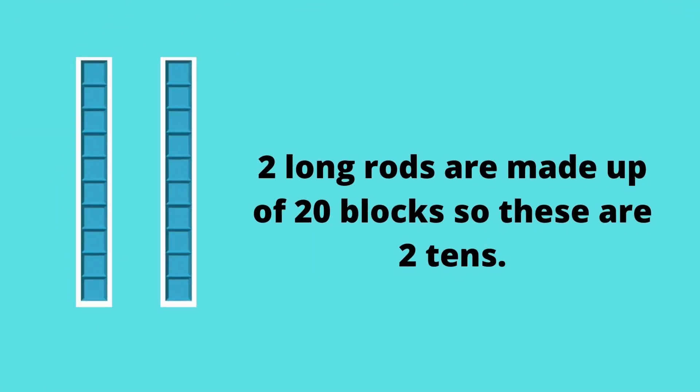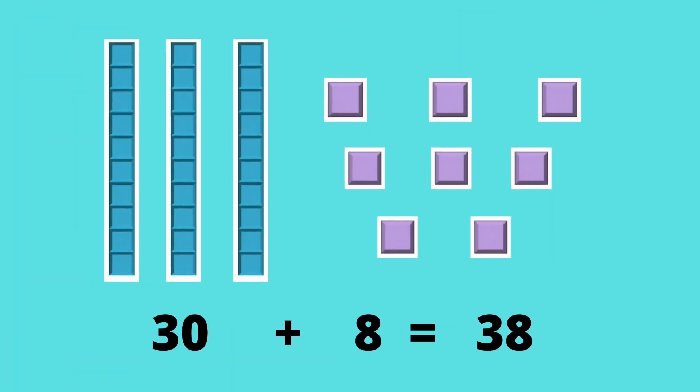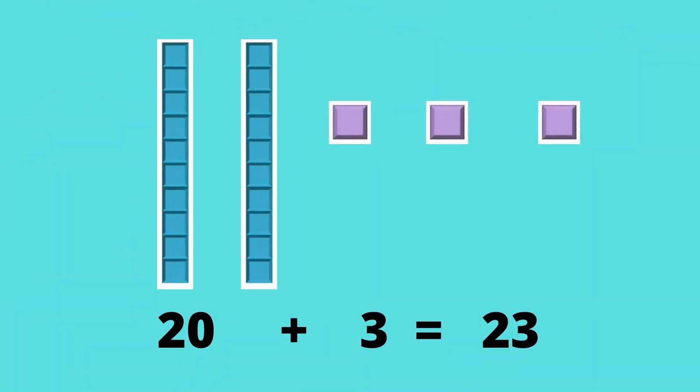Two long rods will make two tens, which equals 20. Similarly, three long rods make three tens, which is 30. In this example, we have three tens, which is 30, and eight ones, and together they make 38.